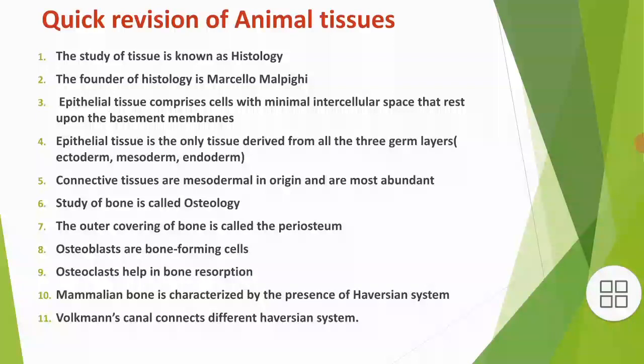The outer covering of bone is called the periosteum. Osteoblasts are bone-forming cells, whereas osteoclasts help in bone resorption. Mammalian bone is characterized by the presence of the Haversian system. Volkmann's canals connect different Haversian systems.